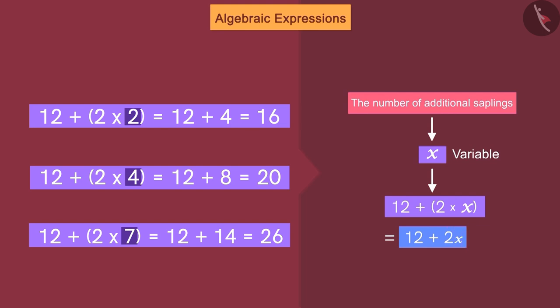12 + 2x is called an expression or an algebraic expression. Expressions are formed by variables and constants. So, we can say that this expression is formed by x multiplied by two and the constant is twelve.